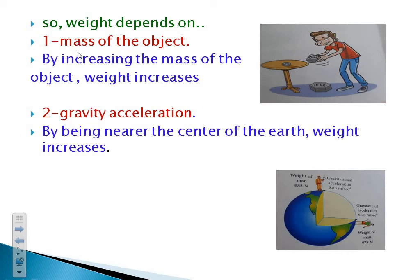Number one, the mass: by increasing the mass, the weight increases. Number two, gravity acceleration: by being nearer to the center of the earth — as you see in this picture — the weight increases.